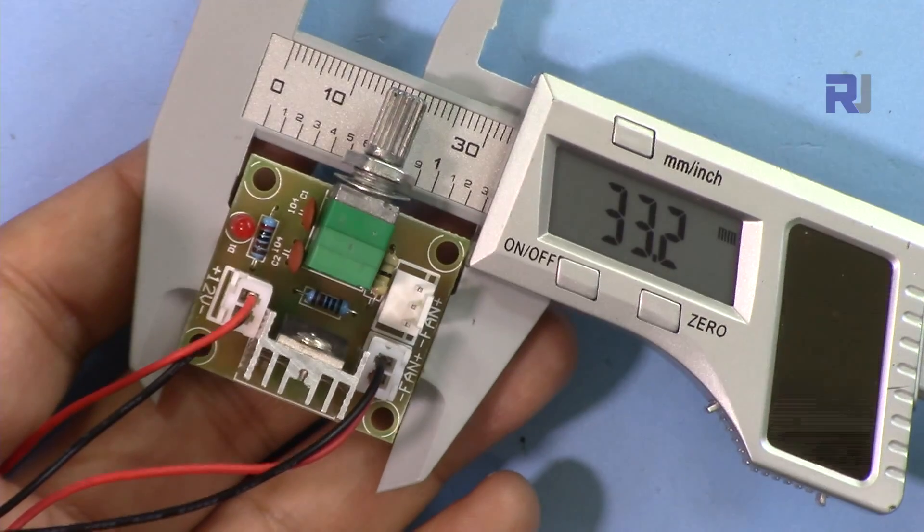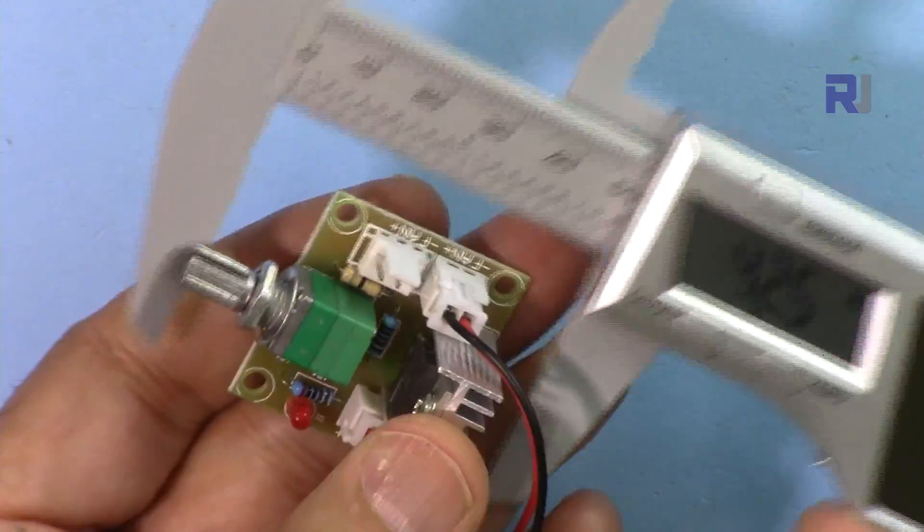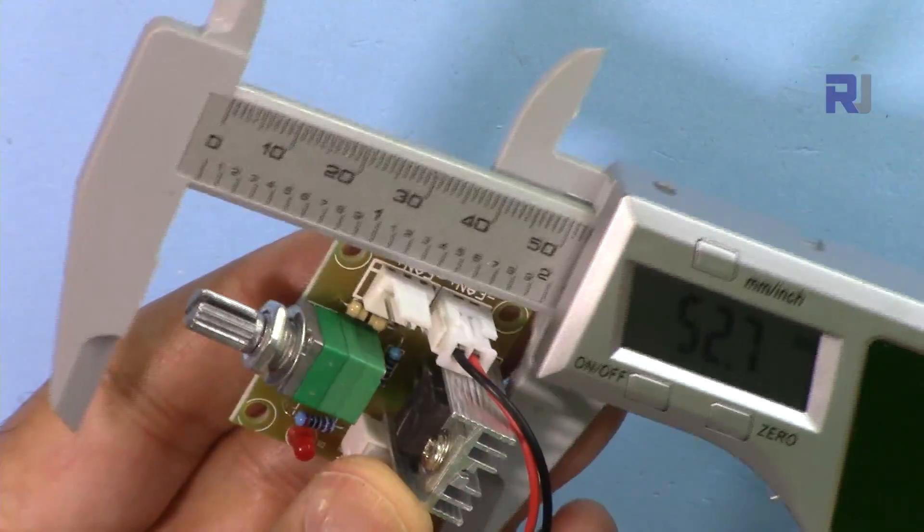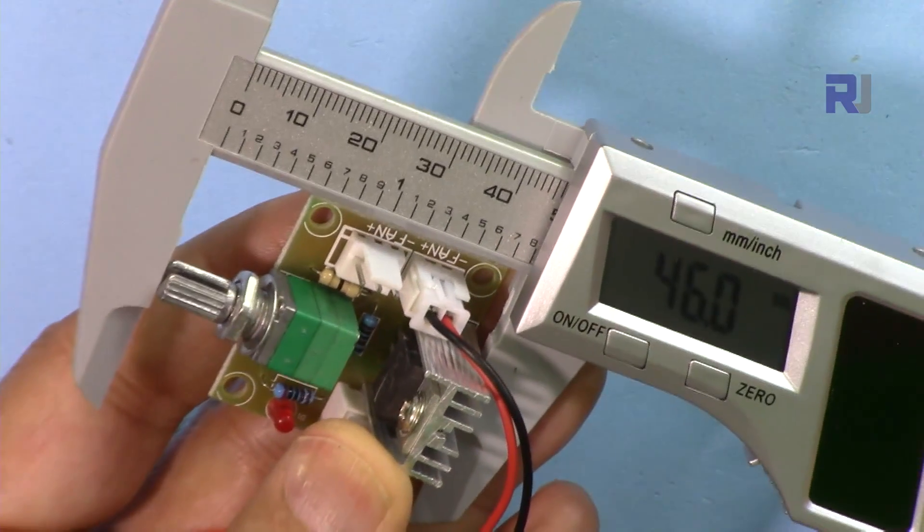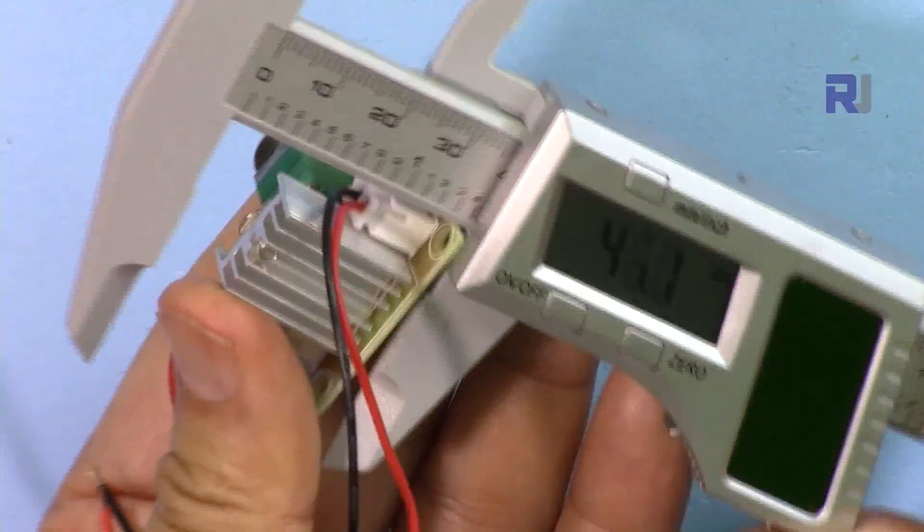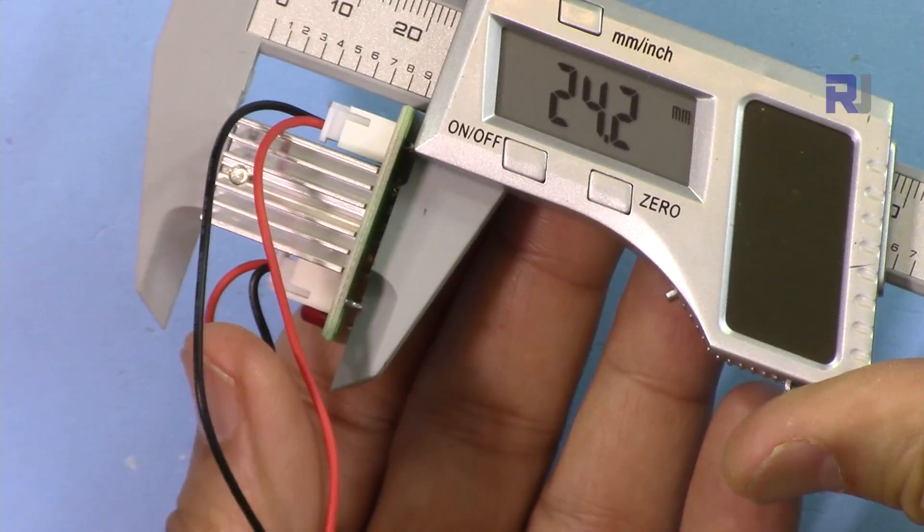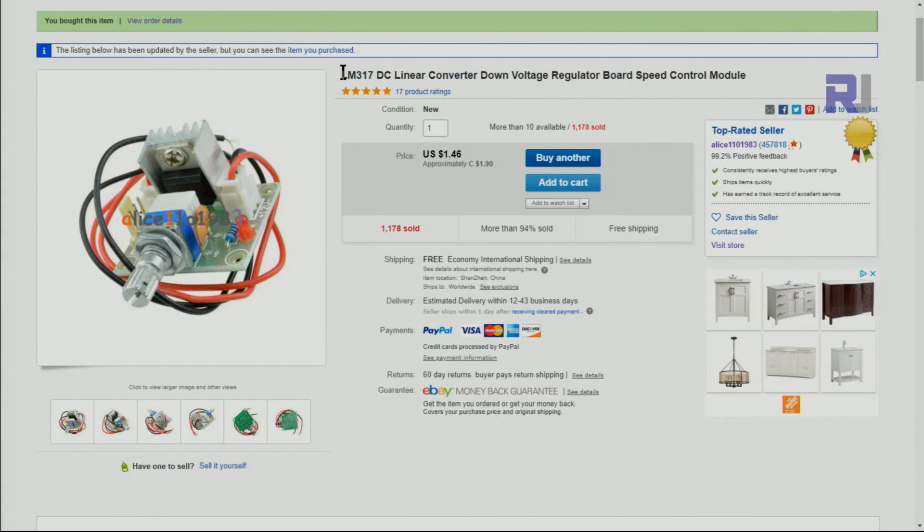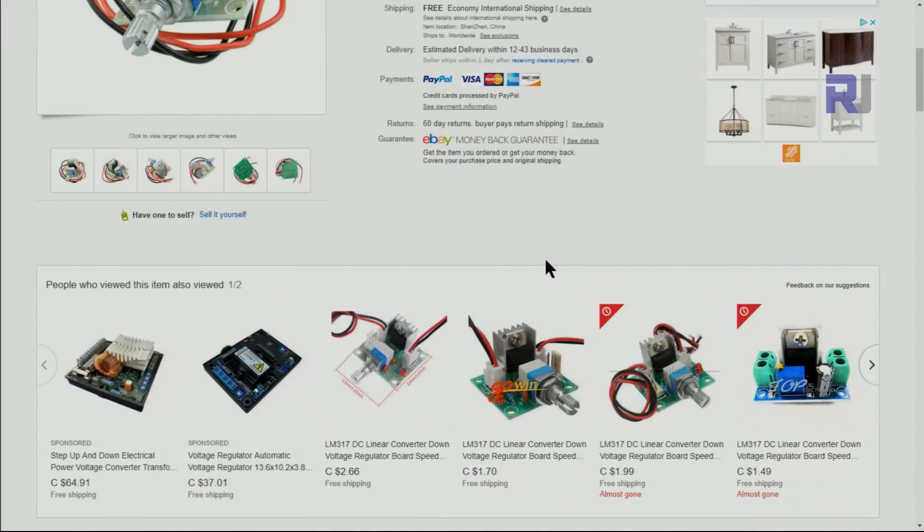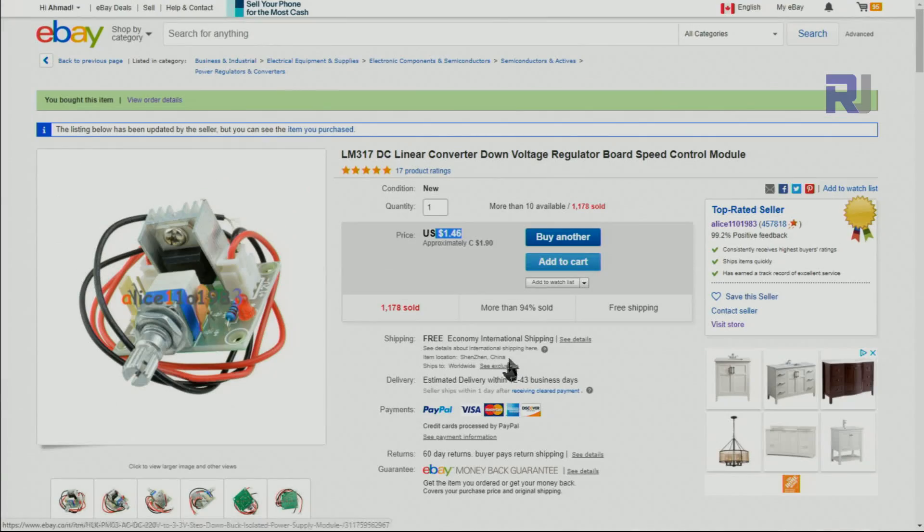Length of this module is 33.2, width of the PCB is 30.4. With the potentiometer the length is 46. Depth of the device is 24.2 millimeters. Here is the item on eBay. They also mentioned a speed controller, fan speed controller or motor which can be done as well. The price is one dollar for six US. I will also provide you the link for eBay.